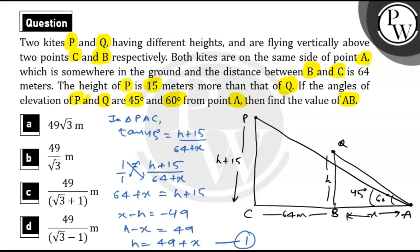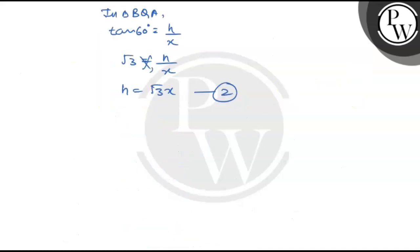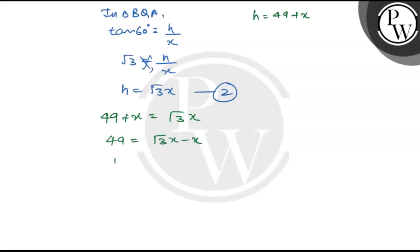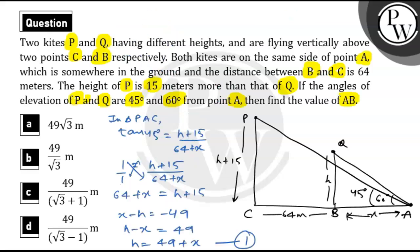Now from Equation 1, H = 49 + X, and from Equation 2, H = √3·X. Since we want to find X, we eliminate H by substituting Equation 1 into Equation 2: 49 + X = √3·X. Shifting X to the right: 49 = √3·X minus X = (√3 minus 1)·X. Therefore X = 49 / (√3 minus 1) meters. Checking the options, this matches Option D. So the correct answer is Option D. I hope this question was clear to you. Thank you.